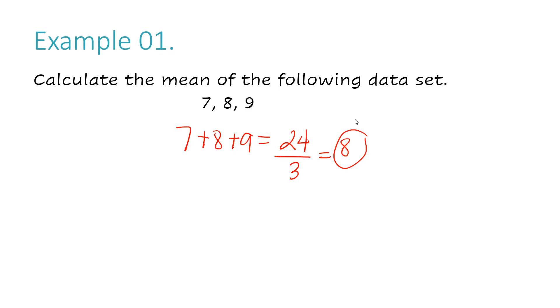Let's take a look at example number two. Calculate the mean of the following data set. Well, again, I'm going to start by adding all my numbers: 4, plus 5, plus 3, plus 9, plus 8, plus 12, and plus 1. And that gives me a total of 42.